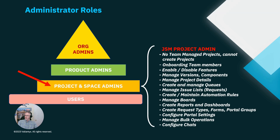Very similar to Jira Software and Jira core, a JSM project admin onboards team members into their respective projects. They enable or disable certain features and functions available in a JSM project. They manage versions — yes, JSM projects can have versions — and they also manage components, because both versions and components are specific to a JSM project. Therefore, it is the role of a JSM project admin to create components and versions. They can also manage project details, and a very important function is to create and manage queues, which are used by agents to manage their work.